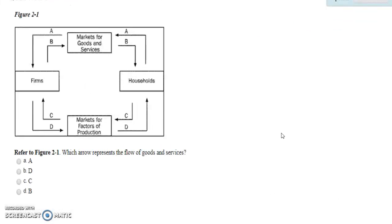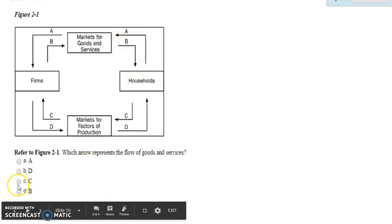Question three: Which arrow represents the flow of goods and services? Firms sell their goods and services and households buy them. The arrow that represents the flow of goods and services is B, so the answer is B.